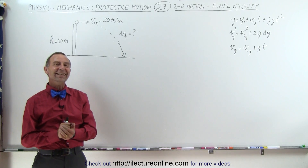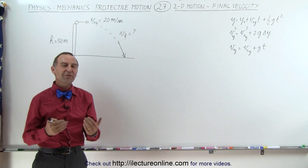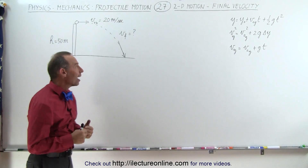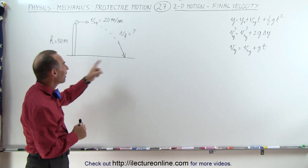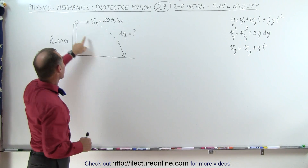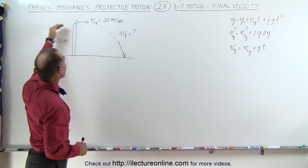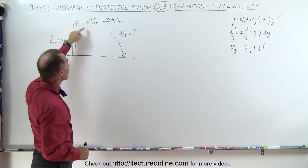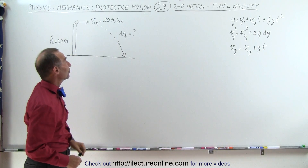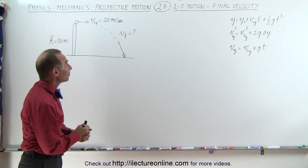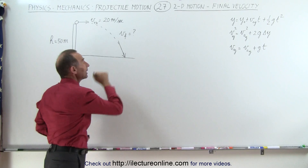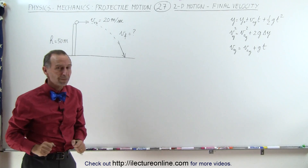Welcome to Electronline. In this video we're going to figure out how to find the final velocity of an object which is thrown off a building in a horizontal direction at some velocity — 20 meters per second in the x direction. What we're trying to do here is find the final velocity when it lands.